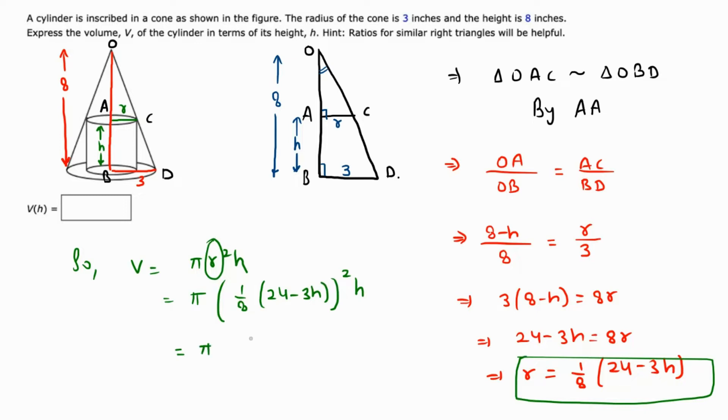We can take 3 as a common factor, giving V = π[3(8 - h)/8]²h = π[3(8 - h)]²h/64.